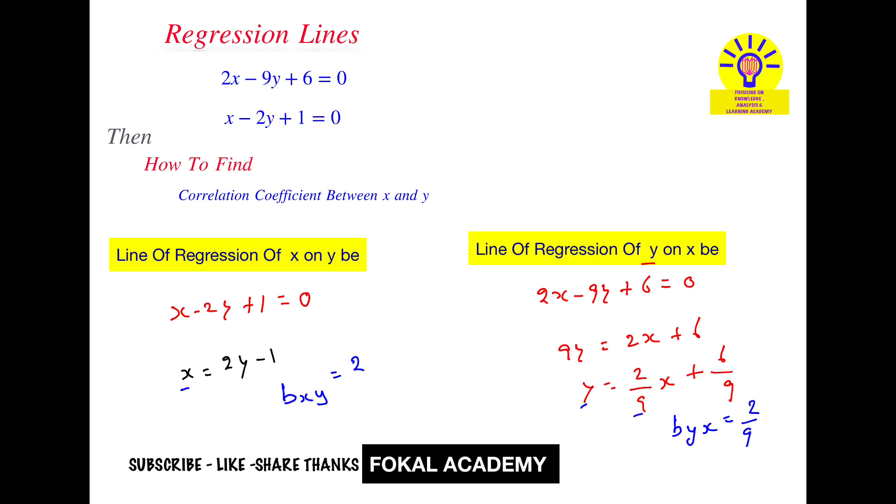Now same formula apply. Correlation coefficient r equal to root of bxy into byx. It becomes root of 2 into 2 by 9, it becomes root of 4 by 9, nothing but 2 by 3.